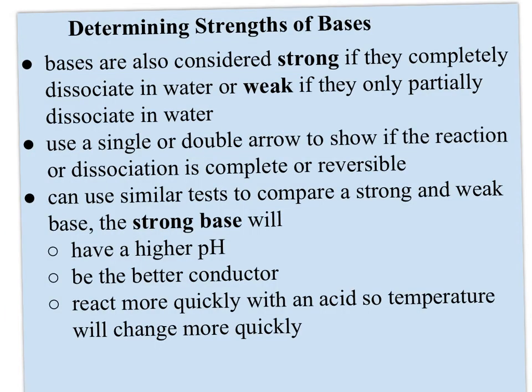How about bases? Bases are also considered strong if they completely dissociate in water, and weak if they only partially dissociate. We can use a single or double arrow to show if the reaction is complete or reversible, and very similar tests compare strong and weak bases. A strong base will have a higher pH — like 12 to 14 — while a weak base will be around 8 to 11. It'll be the better conductor and will react more quickly with an acid, giving a faster temperature change. It doesn't react with metal, however.